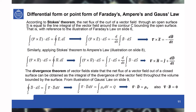Maxwell's equations can also be expressed in a differential form, or point form, of Faraday's, Ampere's, and Gauss's law. For deriving this, we use Stokes' theorem as well as the divergence theorem. Stokes' theorem states that the net flux of the curl of a vector field through an open surface S is equal to the line integral of the vector field around the contour C bounding the open surface.